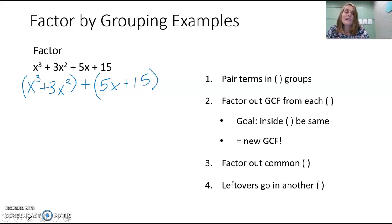Now, factor out the greatest common factor from each parentheses. So from our first group, x³ and 3x² have an x² in common. So I'm going to factor out that x². And when I do that, x³ divided by x² is x, and 3x² divided by x² is 3.